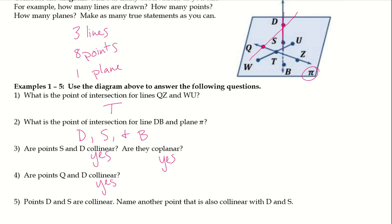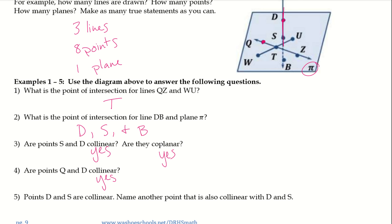Points D and S are collinear. Name another point that is also collinear with DS. I'm going to follow this line down — it looks like B is also collinear with those points.